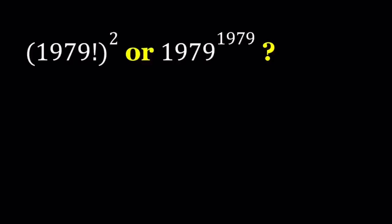Hello everyone. In this video, we're going to be comparing two very large numbers. This problem is from Russia, by the way. I don't know what competition, but I just saw this in a book. So we are going to find out which number is greater. We have 1979 factorial squared or 1979 to the power of 1979.